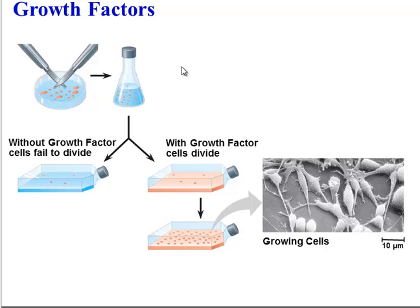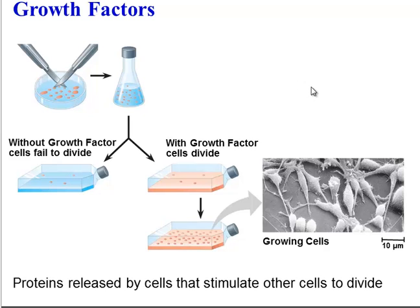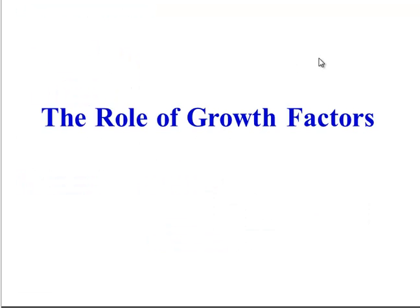The third and most important factor in controlling cell division is growth factors. As you can see in this experiment, here we have some cells. If the cells are not given a growth factor, they fail to divide. But if the cells are given a growth factor, they will divide. So, what is a growth factor? It's just a protein released by a cell that will stimulate another cell to grow and divide. And there are at least 50 different growth factors in your body.